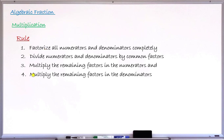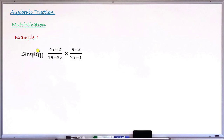Example number one: simplify the multiplication of two algebraic fractions. The first fraction is (4x − 2) over (15 − 3x), and this is to be multiplied by the second fraction (5 − x) over (2x − 1).